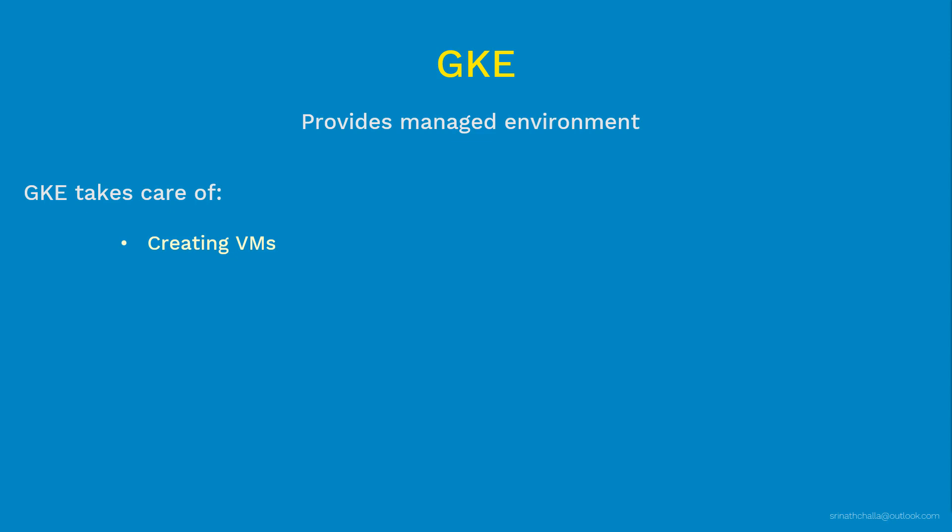Next, GKE takes care of managing the Kubernetes master. Typically, you require a couple of Kubernetes master nodes for high availability and load balancing purposes. But if you are using GKE, you don't have to worry about how many master nodes are required, because GKE takes the responsibility of keeping the master node up and running at all times. Next, etcd — a key-value data store. Kubernetes stores all its configuration about nodes and objects in etcd. Typically it requires multiple copies to address fault tolerance, but GKE takes care of how many etcd instances are required.